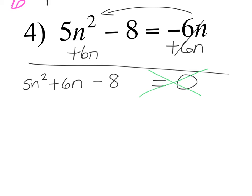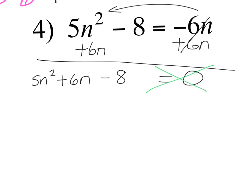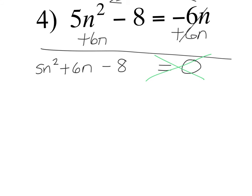Now that the equation is set equal to zero, ignore the zero for a second and factor the left side. Always put the biggest exponent first, then the variable with exponent one, then the constant — that's standard form with your a, b, c order. There's no GCF. It's not special since neither 5 nor negative 8 is a perfect square. It is a quadratic trinomial, but a isn't equal to one, so you have to use the AC method.